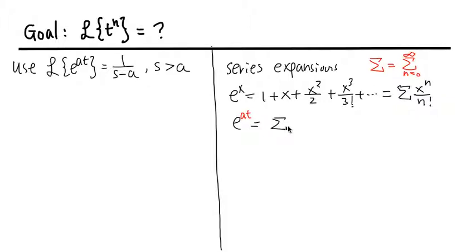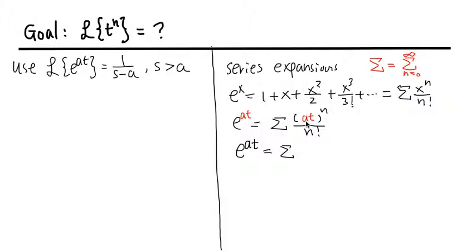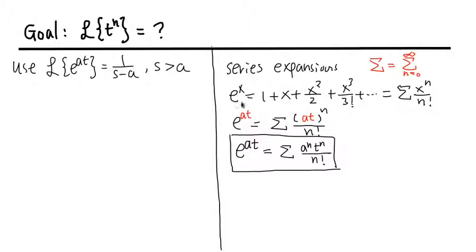So e to the at equals the summation of (at) to the nth power over n factorial, which is the same as a to the n power times t to the n power over n factorial. Let's call this equation number 1.